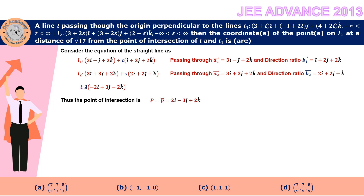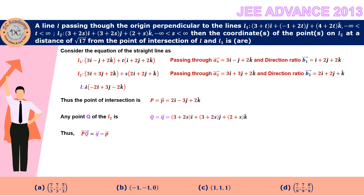Now we need to find a point on L2 at a distance √17 from point P. Any point Q on L2 has position vector q = (3 + 2s)i + (3 + 2s)j + (2 + s)k. We compute the vector PQ = q − p, substituting the values of q and p and performing basic vector algebra.